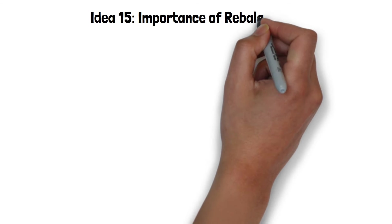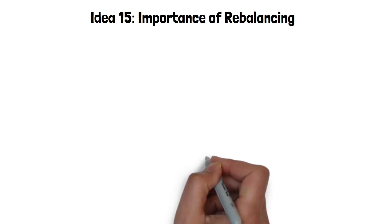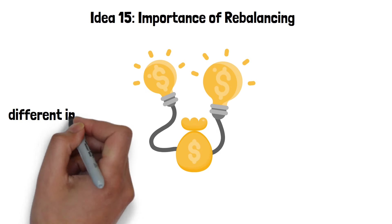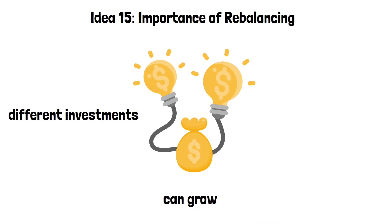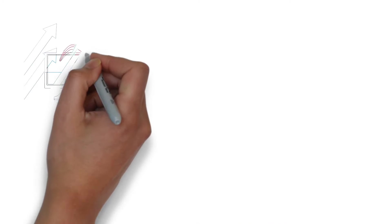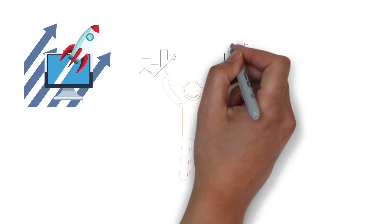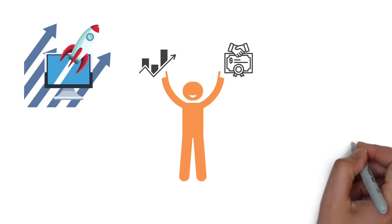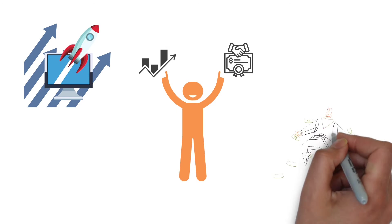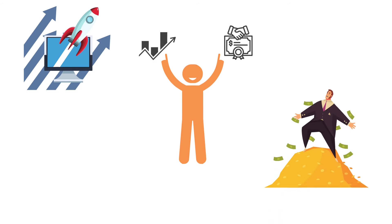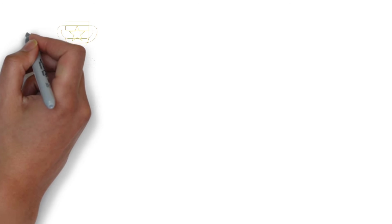Idea 15: Importance of rebalancing. Rebalancing your investment portfolio is like making sure a ship stays on course during a long journey. Over time, different investments can grow at different rates. Some parts of your portfolio might start to take up more space than you originally planned, which can change the amount of risk you're facing. For example, if you've decided that you want half of your money in stocks and half in bonds, but stocks have a great year, you might end up with a lot more of your portfolio in stocks than you wanted. This could mean you're taking on more risk than you're comfortable with.